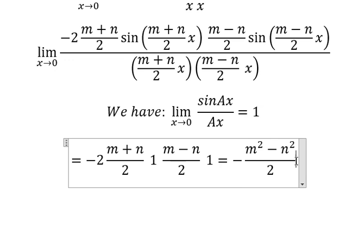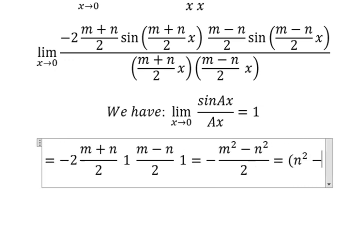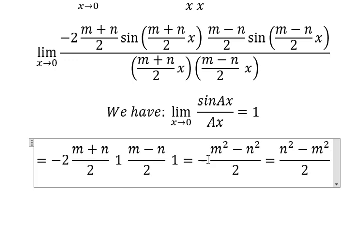So this one we can put into n squared minus m squared over 2, because we want to change the sign of this one by negative in here.